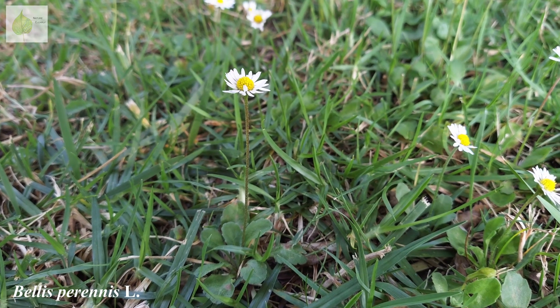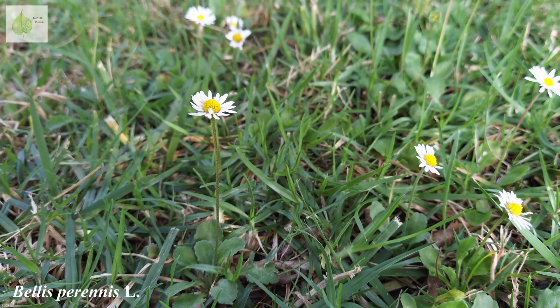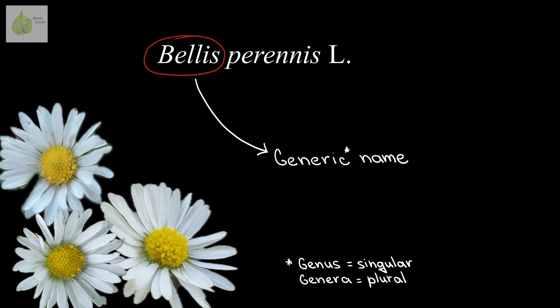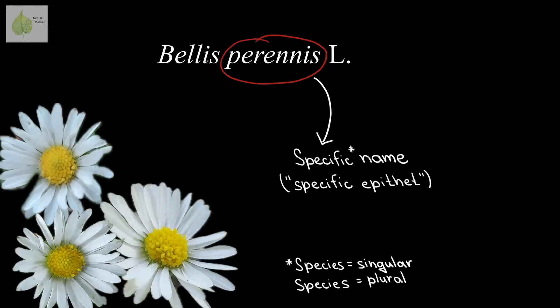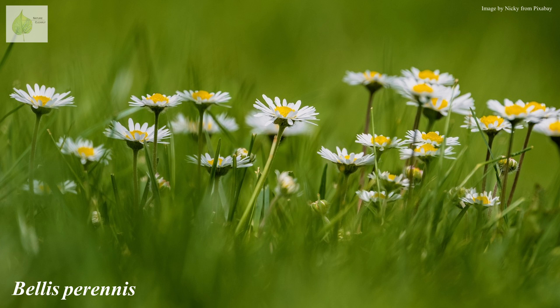Let's dive straight into decoding some examples of binomial scientific names. First, we have the common daisy, which many of you probably know from your lawn. Its scientific name is Bellis perennis. We use a binomial naming system for organisms, which means their scientific name is composed of two parts. First, Bellis is the generic name, showing us the genus this species belongs to — in this case the genus Bellis, which contains 14 different species. The second word stands for the species and is referred to as the specific epithet. This name, in combination with the genus name, creates a unique name badge for the species.